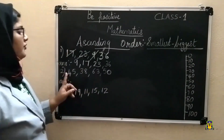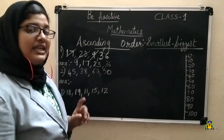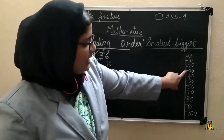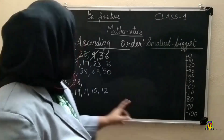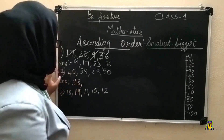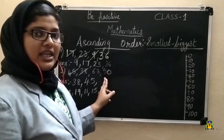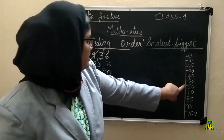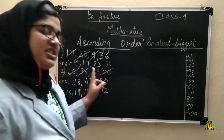Next example: 45, 38, 63, and 50. Which is the smallest number? That is 38, coming under the range 30 to 40. Then in the range 40 to 50, we have 45, so we write 45 and cross it. Then from the remaining 63 and 50, in the range 50 to 60 we have 50, so we write 50 and cross it. The remaining number is 63.